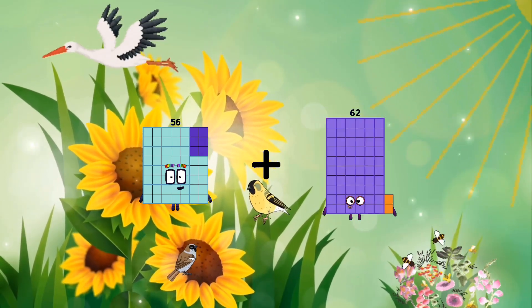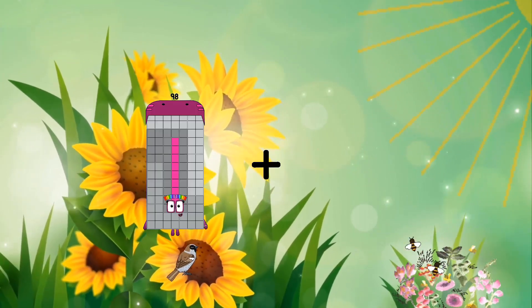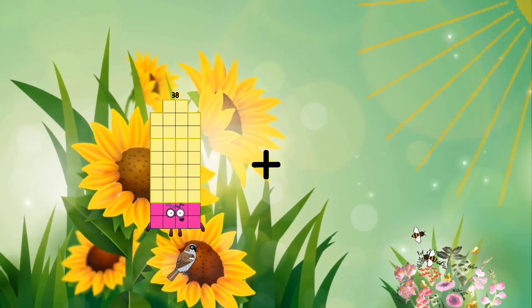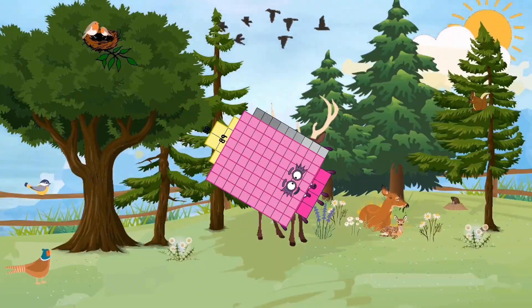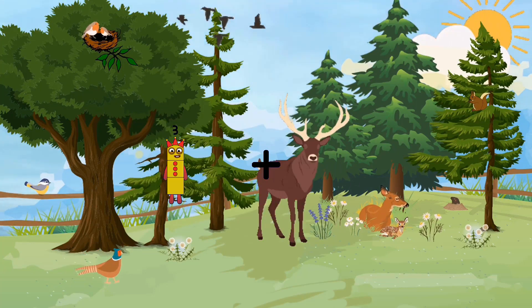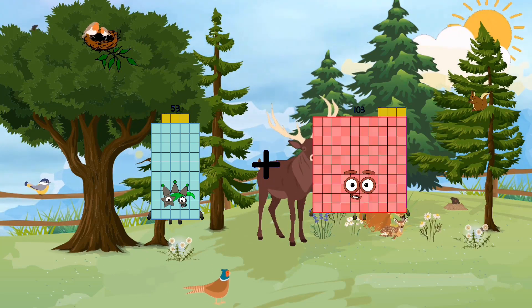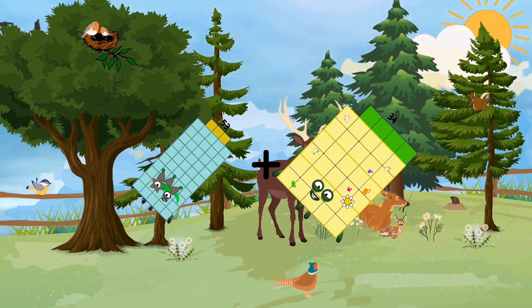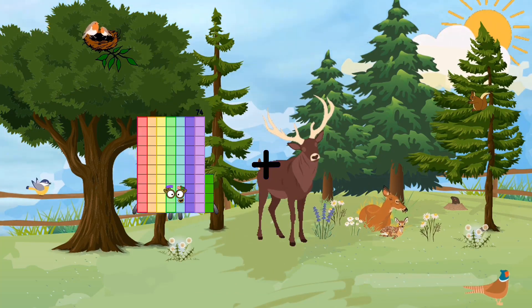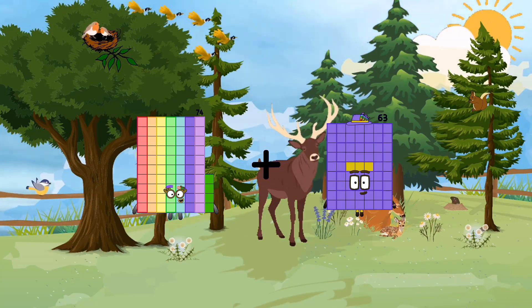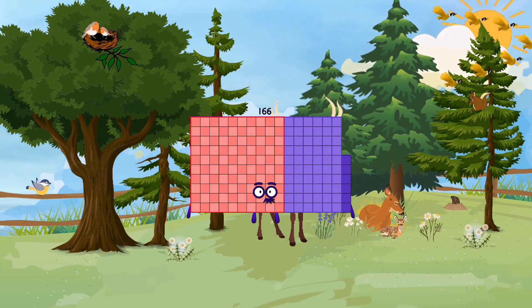56 plus 57 equals 63. 38 plus 89 equals 127. 57 plus 53 plus 34 equals 87. 74 plus 92 equals 166.